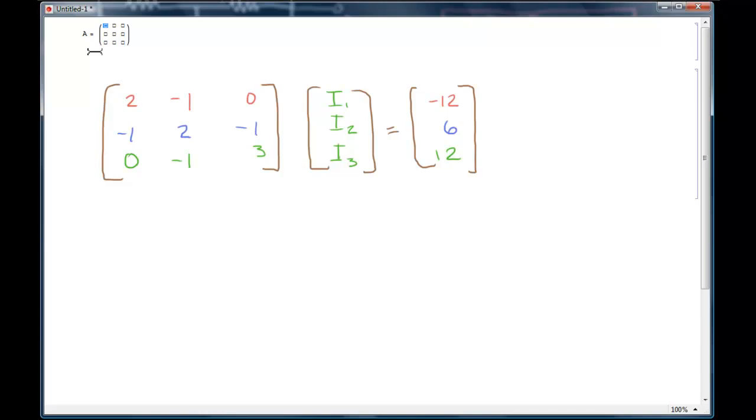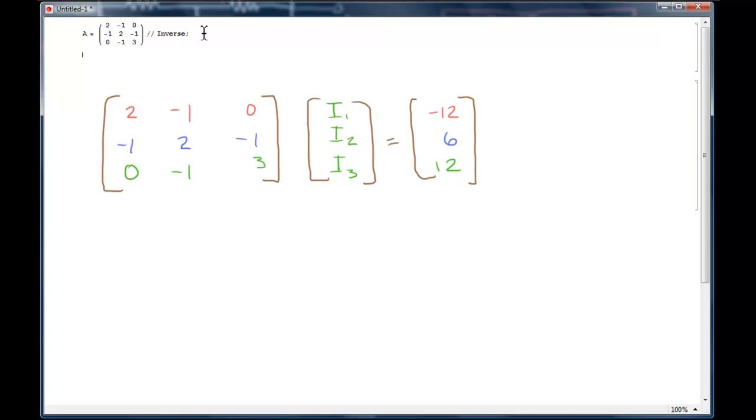Now I can just go up and put my data in. So 2, negative 1, 0, negative 1, 2, negative 1, 0, negative 1, and 3. And again, not an explanation on matrices here. We need to take the inverse of this. I could have thought ahead and put inverse in the front here and then enclosed this thing in square brackets. But you can also just use the forward slash forward slash inverse to invoke the inverse of this. I'm also going to use a semicolon. Semicolon tells Mathematica that we don't want anything output to the console from that first statement.